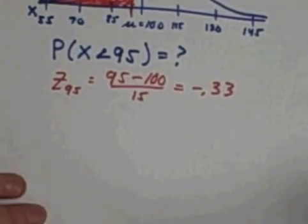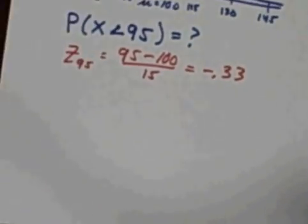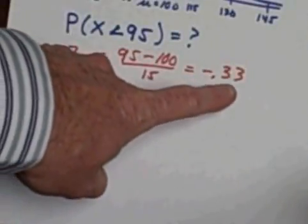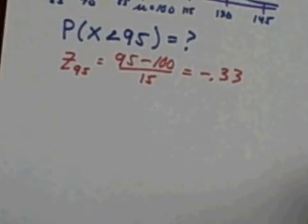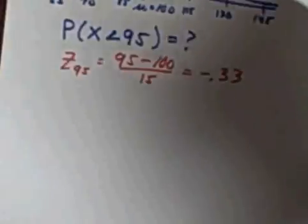Step number two is to then take our z-score table, turn the page to the negative z-score, since we have a negative z-score, and look it up. Now, with a negative 0.33, of course, our whole number is 0. So I'm looking for, on the left column, a negative 0.3. And negative 0.3 is right here. You really should be working this along with me with your own page of z-scores.